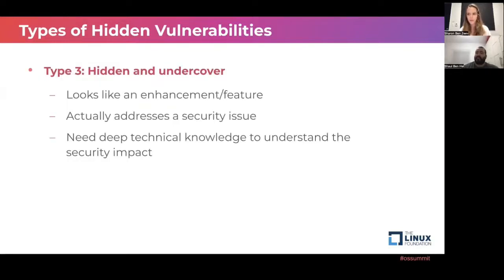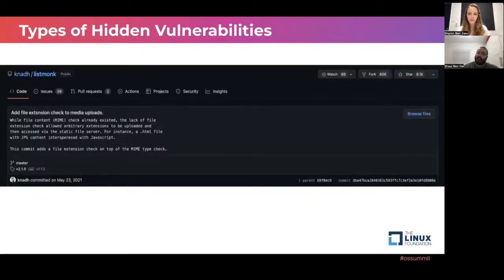The third type of hidden vulnerability is 'hidden and undercover' — it looks like an enhancement or feature, but actually addresses a security issue. It will be difficult for a simple user to notice there is a security vulnerability here; you need some technical knowledge to understand the security impact. A good example is ListMonk: from the initial reading it looks like an addition of some capability, but from the point of a researcher or attacker, we can understand that behind this added capability there is a security vulnerability that can be exploited. This commit is currently in a disclosure process and will get a CVE soon.